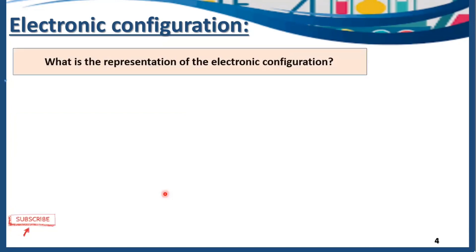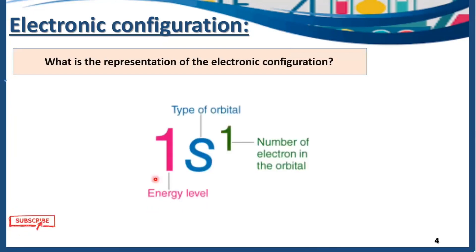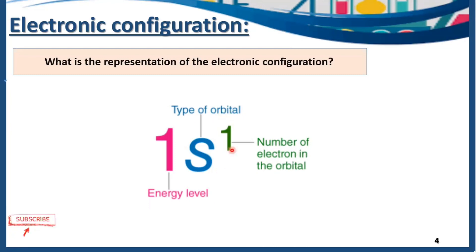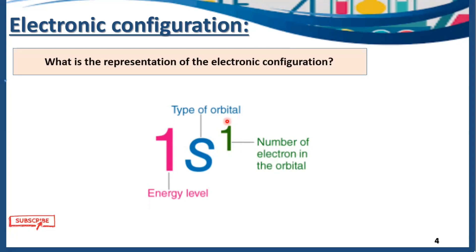What is the representation of electronic configuration? How do we write it? This is how we represent electronic configuration. The first part represents the energy level. The subshell letter represents the type of orbital. And the superscript tells us the number of electrons present in that orbital. The subshell can be different, and the number of electrons in the superscript varies according to the subshells.